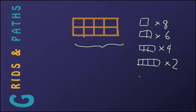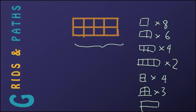We can also count the vertical rectangles. There are 4 2x1 rectangles. There are 3 2x2 squares. What about 2x3? There are 2 of these. And we also have the huge one — all of it together — there is 1.